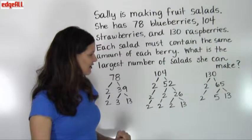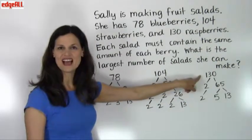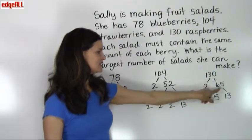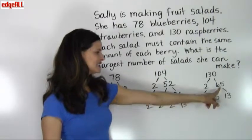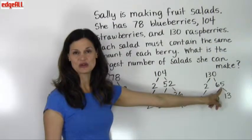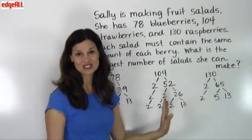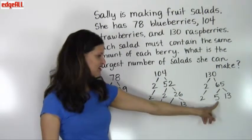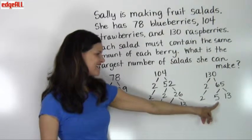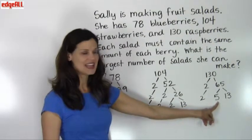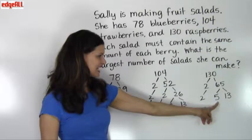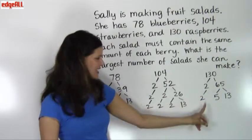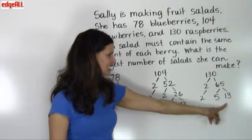For the prime factorization of 130: 130 is divisible by 2, giving 2 times 65. Since 65 is not divisible by 2 or 3, we go to the next prime number, 5, and find that 65 is divisible by 5 — it equals 5 times 13. So the prime factorization of 130 is 2 times 5 times 13.